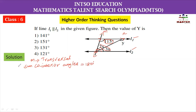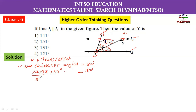Using this property of co-interior angles summing to 180 degrees, we set up: 2X plus 3X plus 115 degrees. Co-interior angles are on the same side of the transversal, so we use 180 degrees. Combining 2X and 3X gives us 5X.